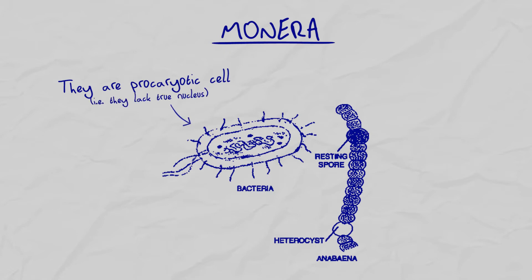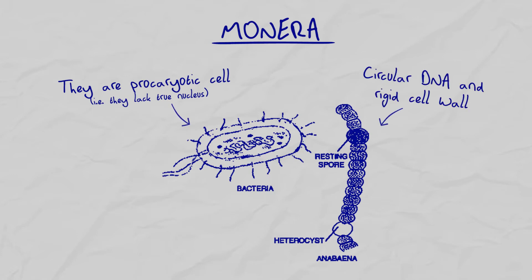Prokaryotic cells lack a true nucleus. They also lack membrane-bound organelles. They have circular DNA and a rigid cell wall.